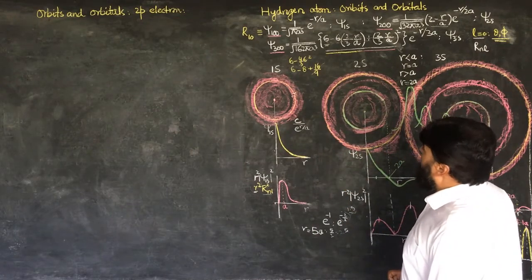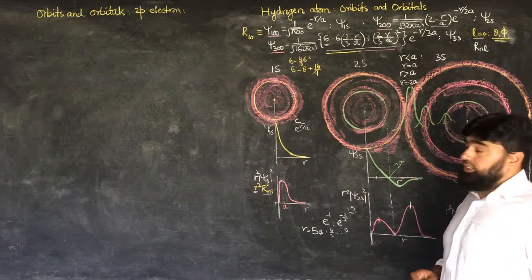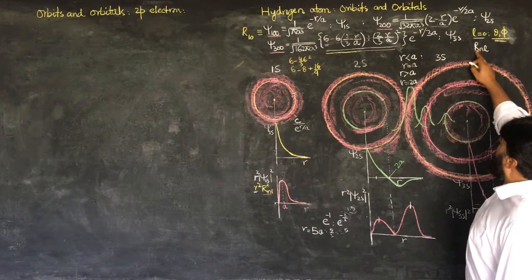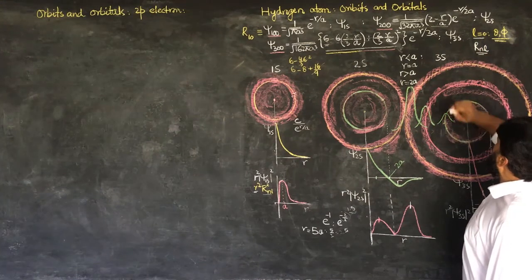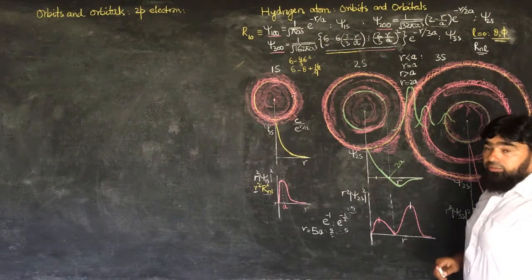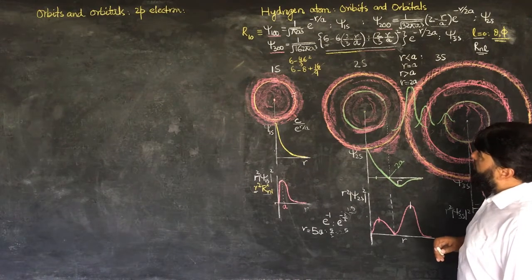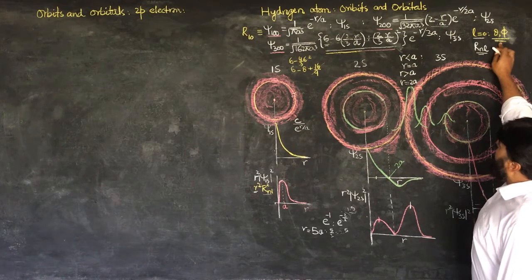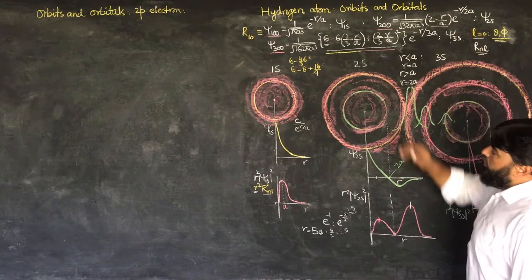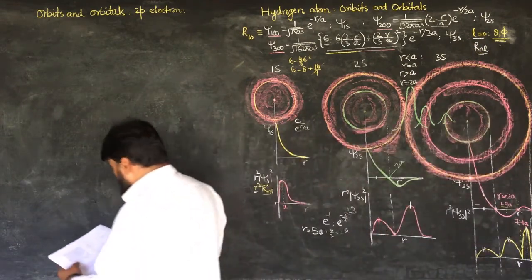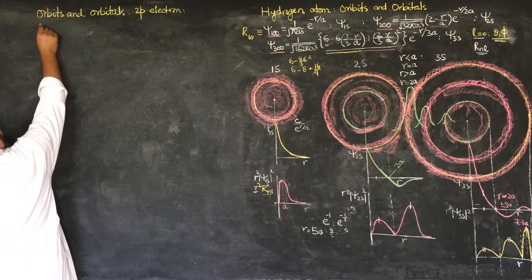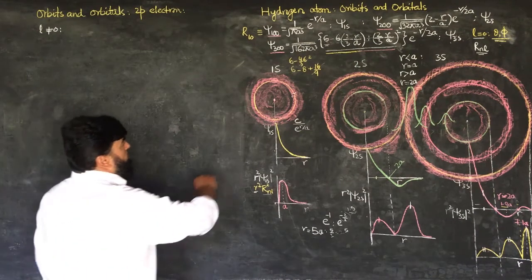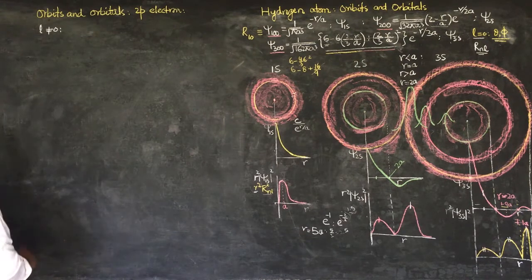In addition to the s orbitals, I will also discuss the p orbitals. In the s orbital, when L is equal to 0, we get spherically symmetric orbitals that depend only on the radial wave function with no dependence on theta and phi. But when we consider any orbital that is not an s orbital, it will not be spherically symmetric, and the angular dependence will determine its shape.